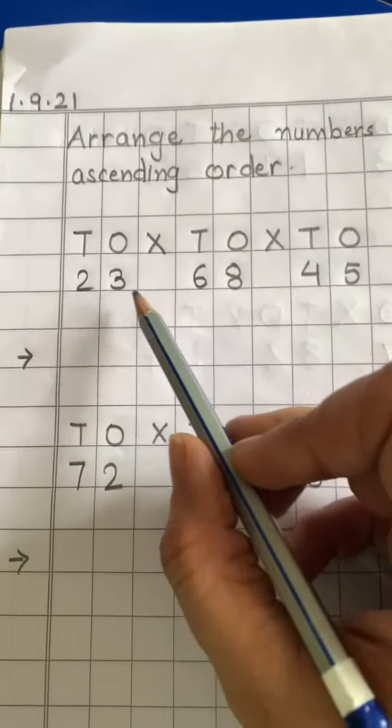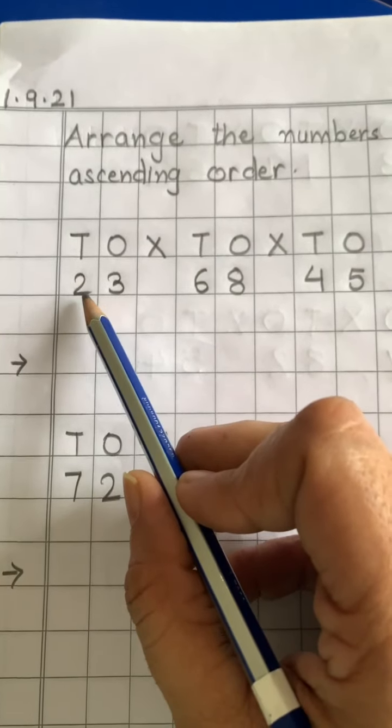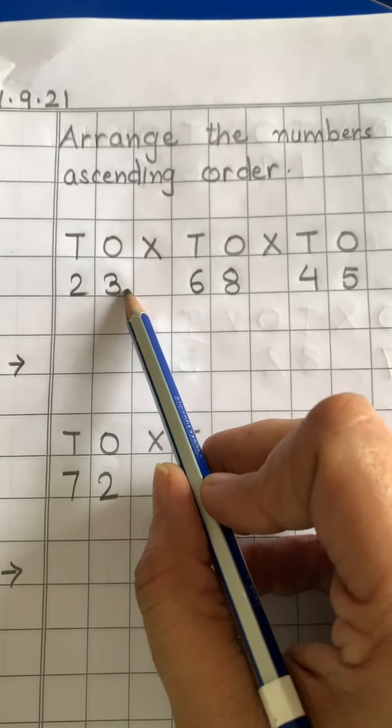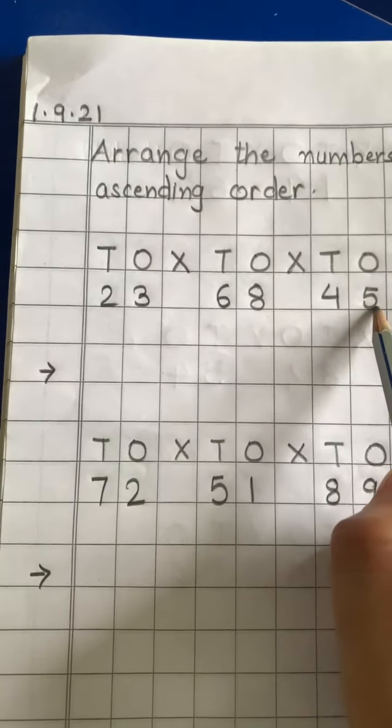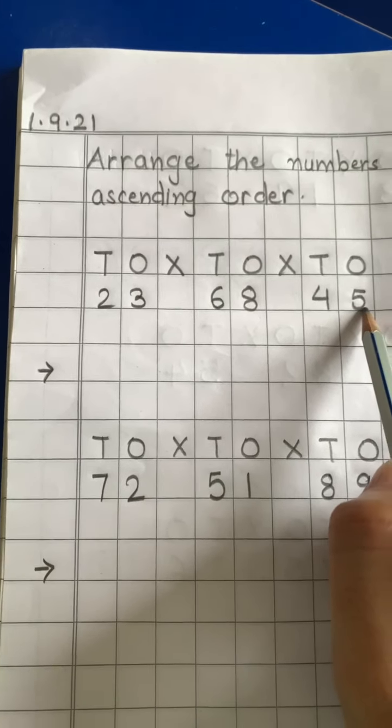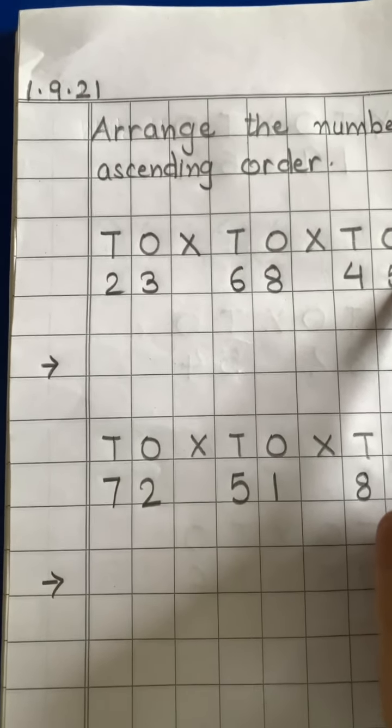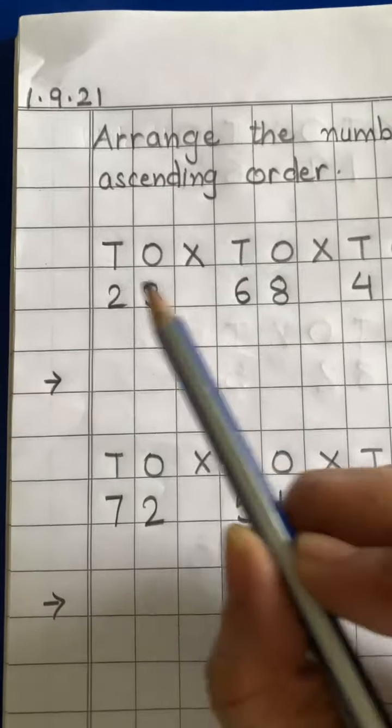We have three numbers: 23, 68 and 45. First what you have to do, circle the number.